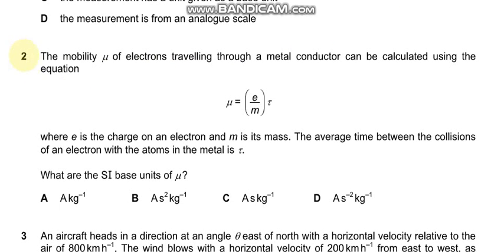Question number 2 says to find the SI base units of mu where E is charge, M is mass, and T is time. So that makes mu equals Q over mass multiplied by time. This would be IT squared over mass, which would become ampere second squared kg minus 1. So that makes B the proper answer.